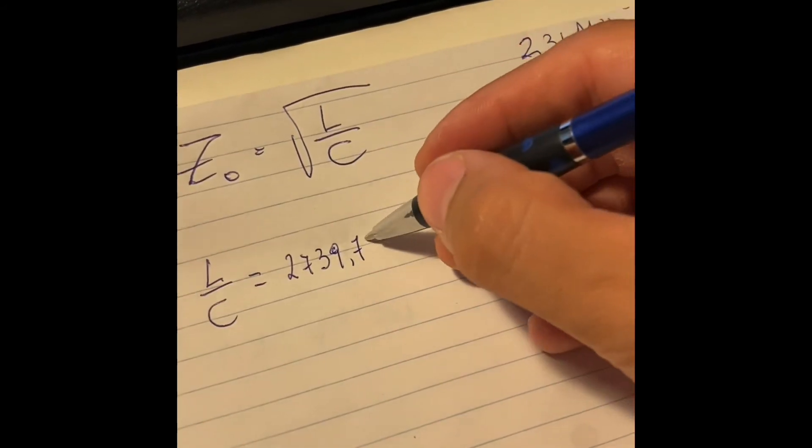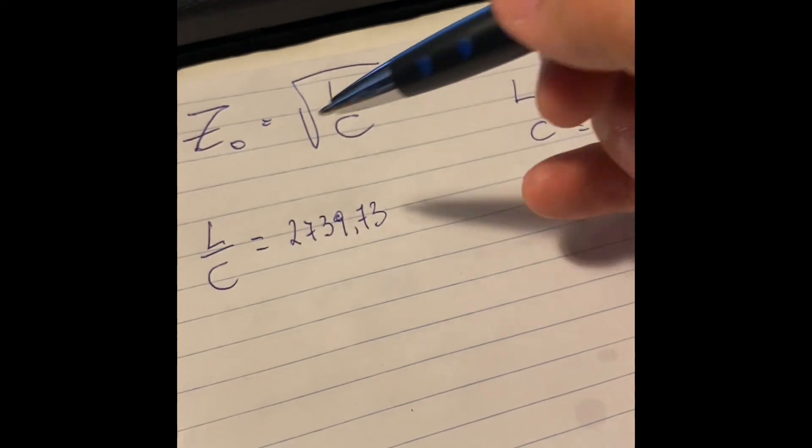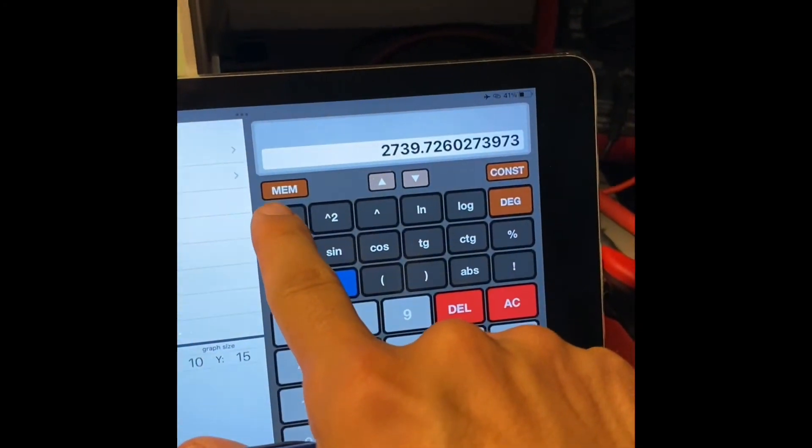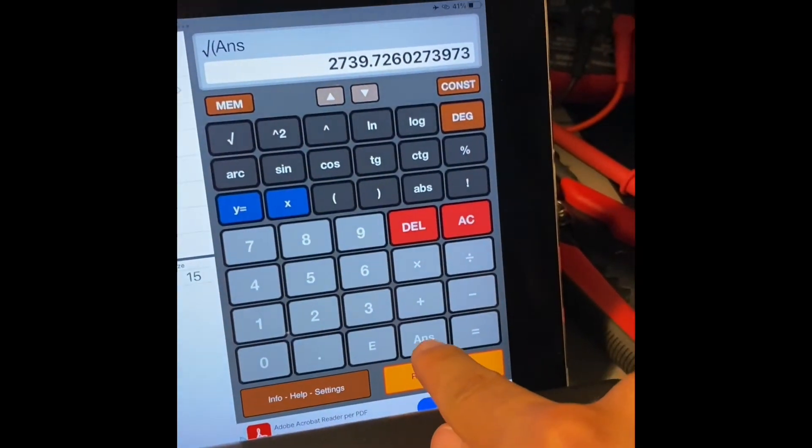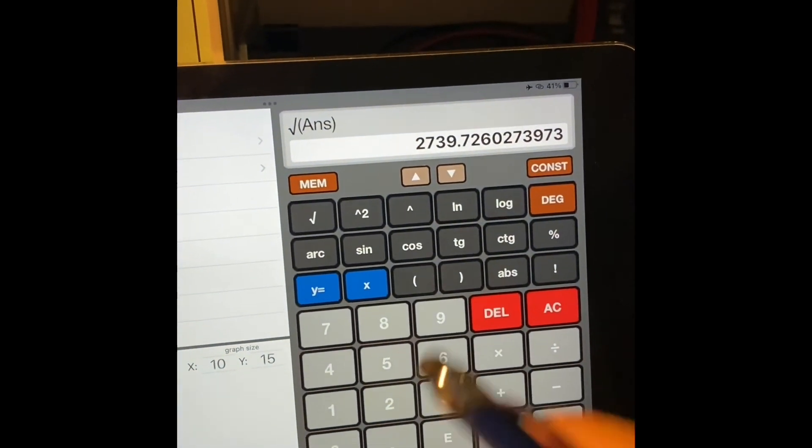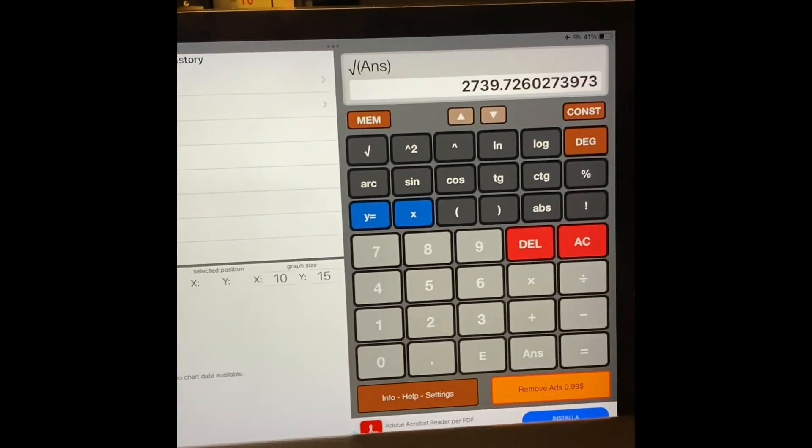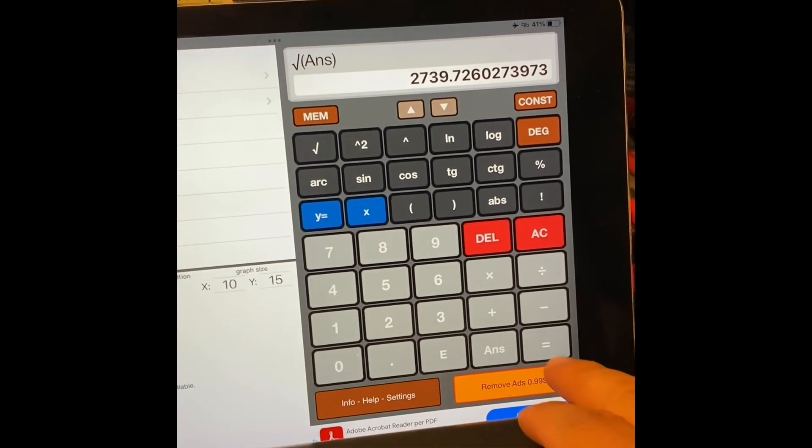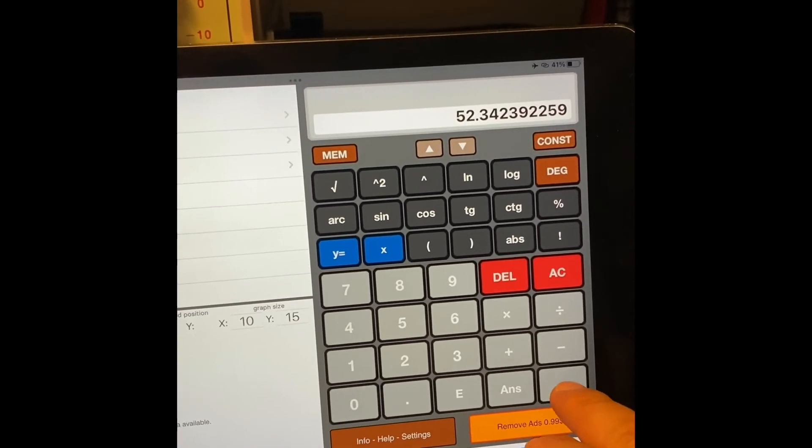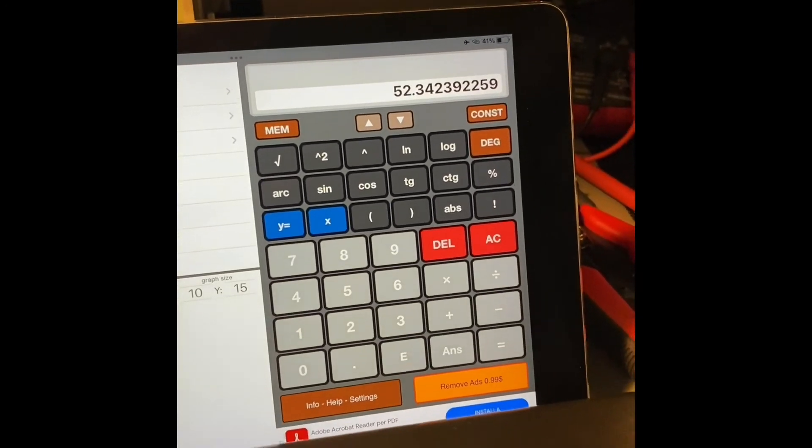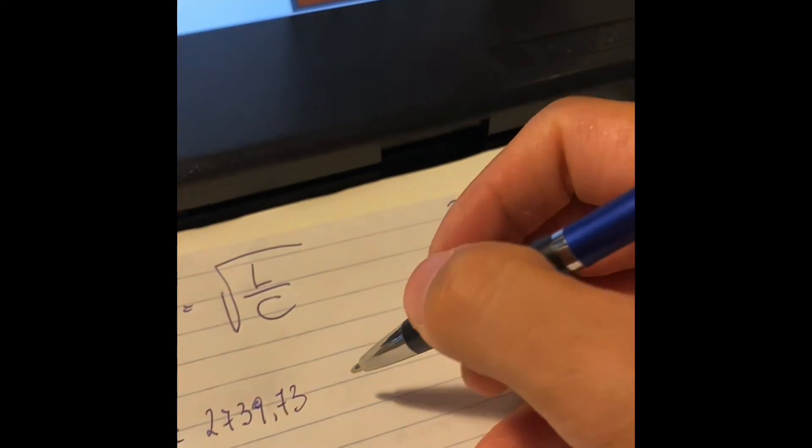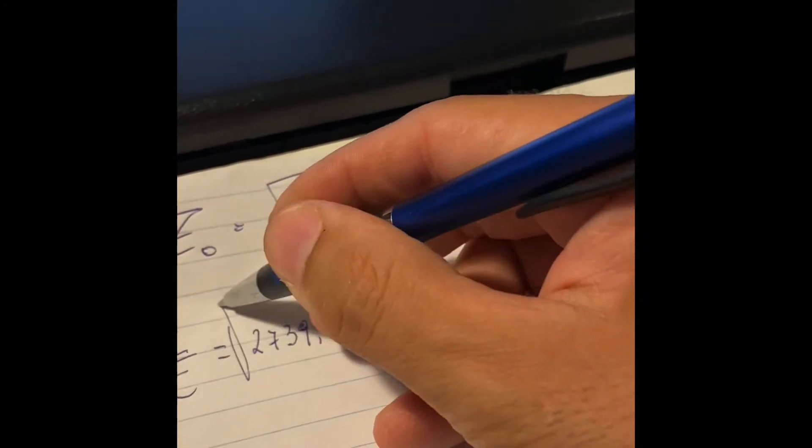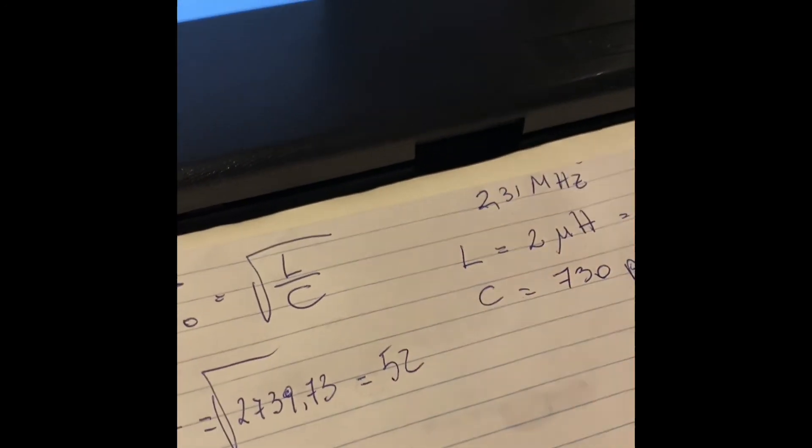Now we want the square root of this number. Apart from the result, we want to see basically if it's close to 50 or close to 75 ohms. So let's hit the square root. I've got 52.3 - that's the result we got.